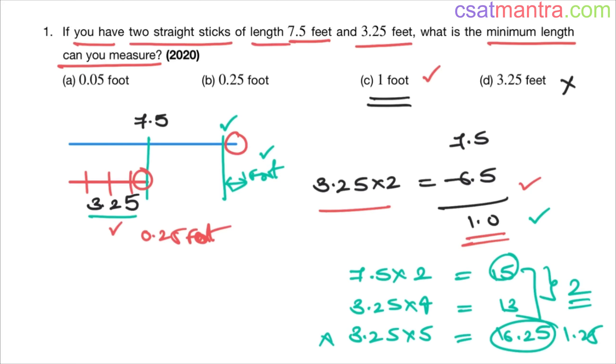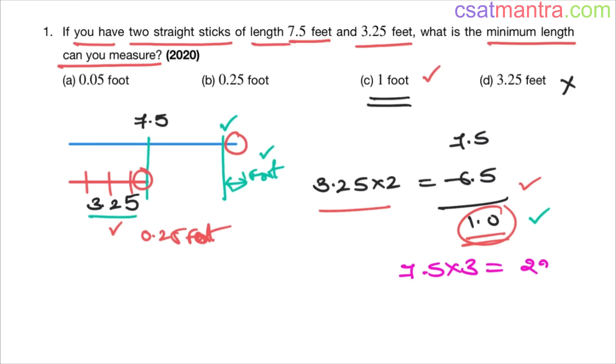That's why now 7.5 into 3, this is 22.5. 3.25 into 7: 3 sevens are 21 plus, 7 times 0.25 is 1.75, so this is 22.75. So the difference is 0.25. Yes, we got the difference less than 1 here.